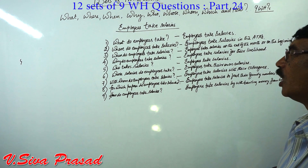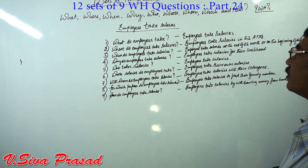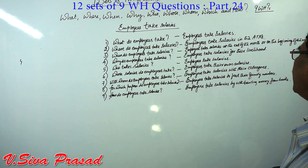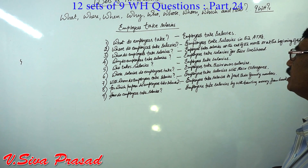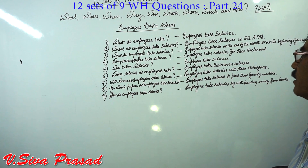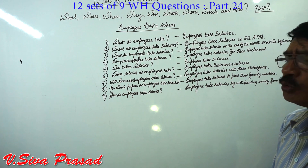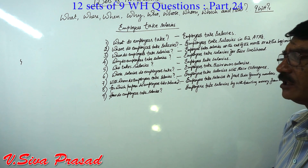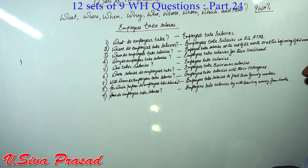Set 8 — Past Perfect: What had employees taken? Employees had taken salaries. Where had employees taken salaries? Employees had taken salaries in the ATMs. When had employees taken salaries? Employees had taken salaries at the end or at the beginning of the month. Who had taken salaries? Employees had taken salaries. Whose salaries had employees taken? Employees had taken their own salaries. With whom had employees taken salaries? Employees had taken salaries with their colleagues. For which purpose had employees taken salaries? Employees had taken salaries to feed their family members. How had employees taken salaries? Employees had taken salaries by withdrawing money from banks.